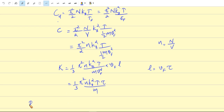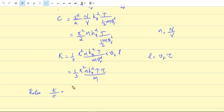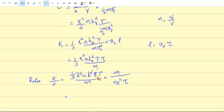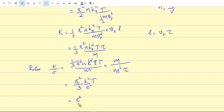The ratio of thermal conductivity to electrical conductivity, κ/σ, is given by: [1/3 · π²·n·kB²·T·τ/m] × [m/(ne²τ)]. Here τ, n, and m all cancel, giving κ/σ = (π²/3)·kB²·T/e² = (π²/3)·(kB/e)²·T.